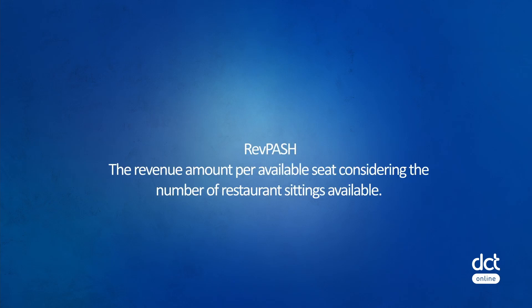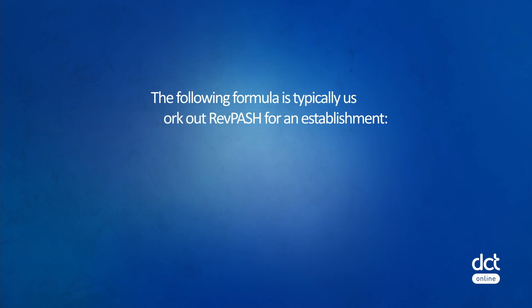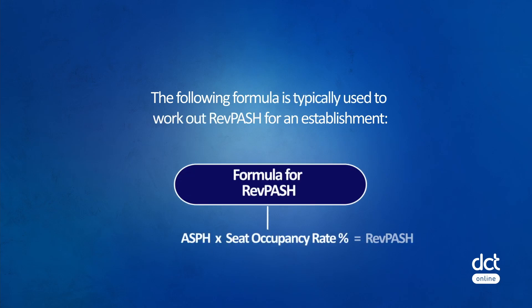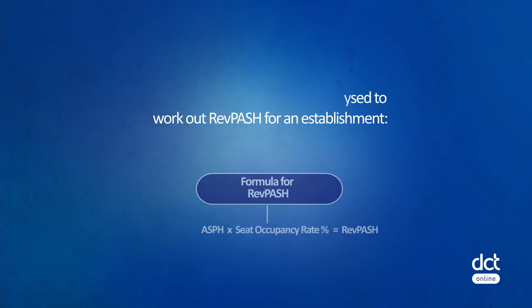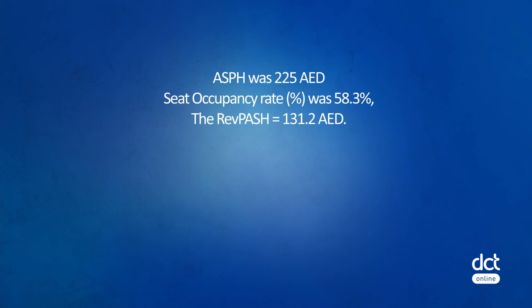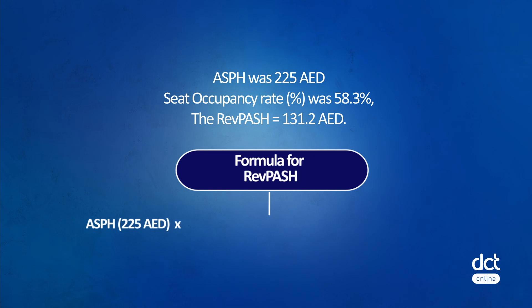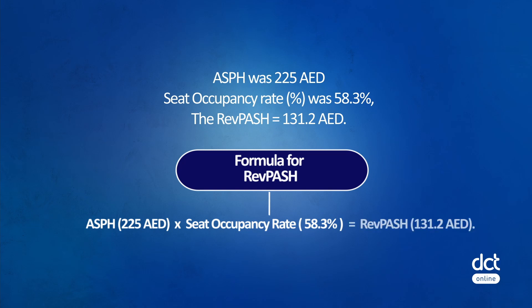RevPASH refers to the revenue amount per available seat, considering the number of restaurant sittings available or turnaround times. The following formula is typically used to work out RevPASH for an establishment. Using figures from our previous illustration where ASPH was 225 AED and the seat occupancy rate percentage was 58.3 percent, the RevPASH would therefore arrive at a figure of 131.2 AED.